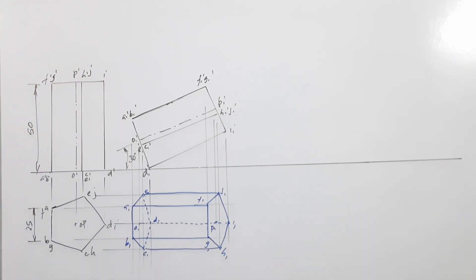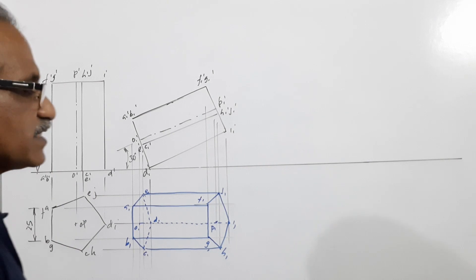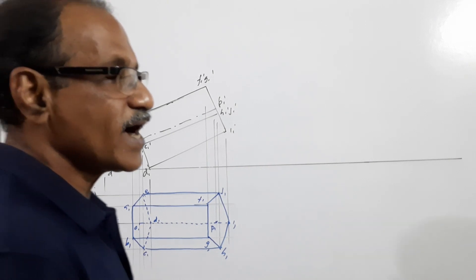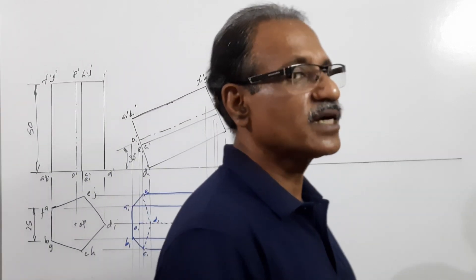This is the plan. The axis is now 30 degrees to HP and parallel to VP. But the question says the axis is 30 degrees to HP and 40 degrees to VP.